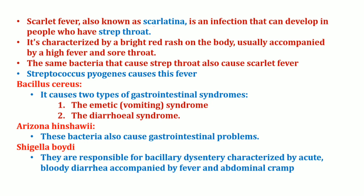Scarlet fever, also known as scarlatina, is an infection that can develop in humans having strep throat. The characteristic feature is a bright red rash on the body, usually accompanied with high fever and sore throat. The same bacteria that causes strep throat can also cause scarlet fever — Streptococcus pyogenes causes this type of disease. Bacillus cereus is mainly associated with emetic syndrome and diarrheal syndrome. Arizona hinshawi is mainly responsible for gastrointestinal problems. Shigella boydii is responsible for bacillary dysentery, characterized by acute bloody diarrhea accompanied by fever and abdominal cramps.